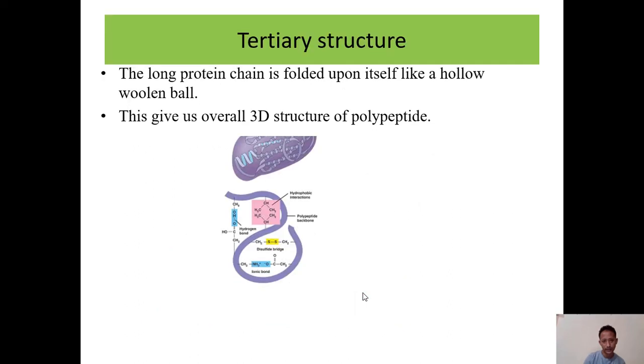Tertiary structure occurs when the protein chain is folded upon itself like a ball. The polypeptide chain folds over itself, giving a 3D structure.